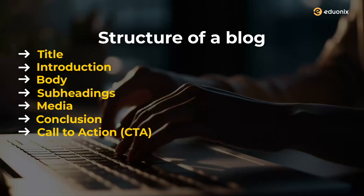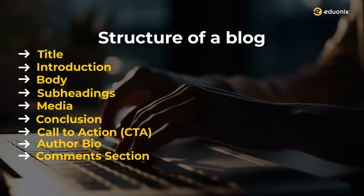Typically in a blog, we also have what we call the author bio — a little introduction about the author: who they are, their experience, and what they've been doing. After that, you have a comment section where people can leave their comments. In some blogs, there are also SEO elements such as descriptions, keywords, and tags, which will ultimately help you get visibility. That's how you basically structure your blogs.